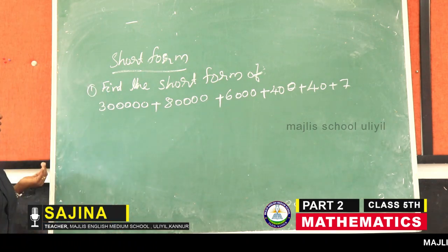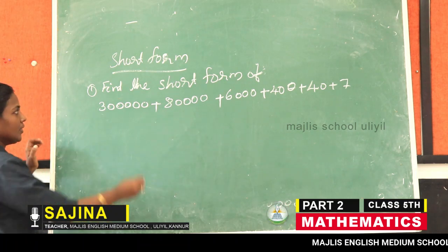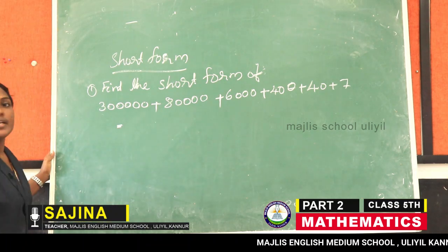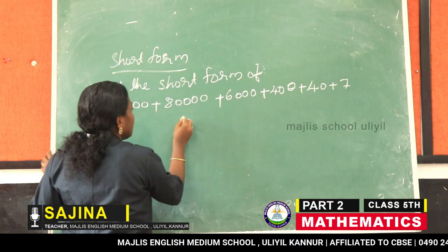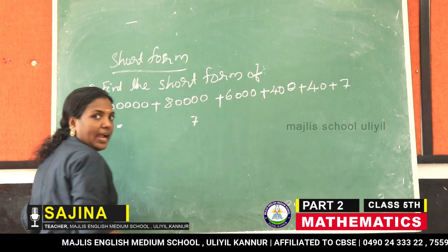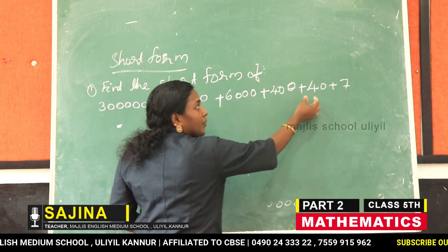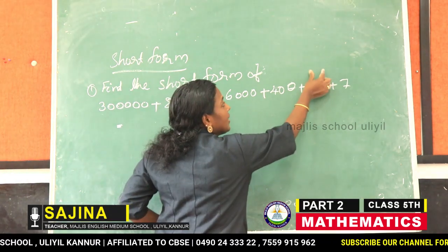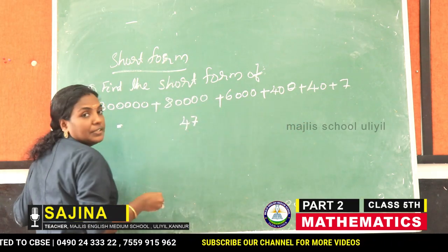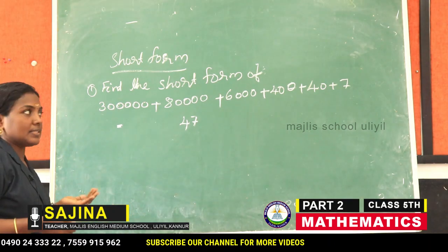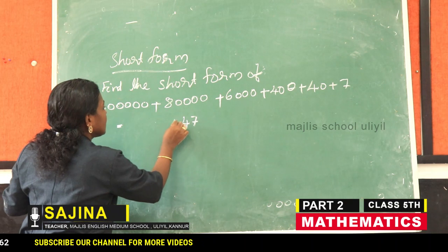What is the short form of this expanded form? Here, seven is in the one's place, so we write seven on the right side. Next, forty is in the ten's place, so we put four. Next is hundreds place — four hundred, so we write four here.